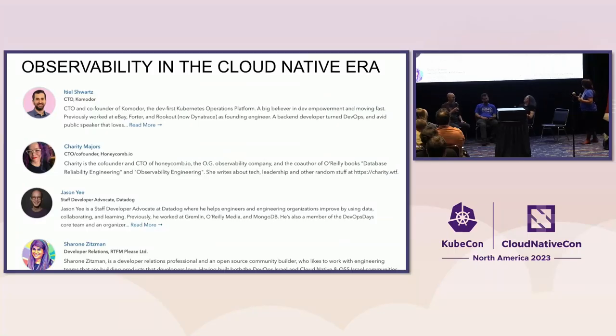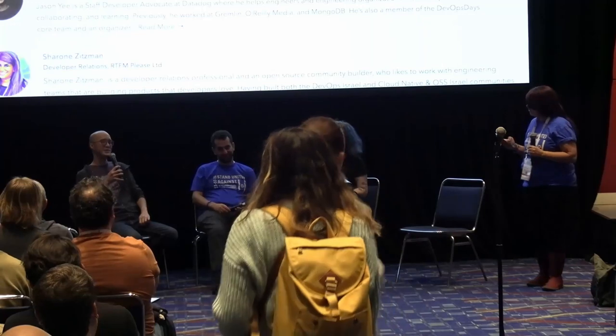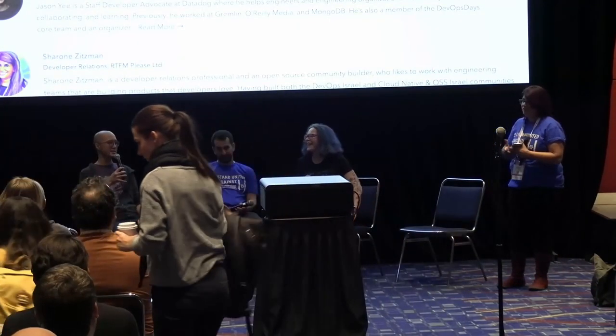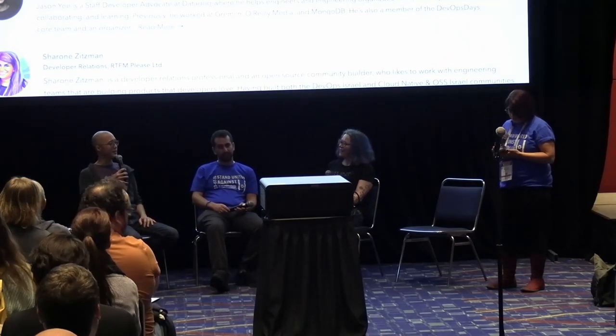I'm Jason, a staff developer advocate at Datadog. I've worked at a number of places — I was at Gremlin doing chaos engineering, because it turns out that breaking things is a good way to test your observability and see what happens. Before that I was a software engineer at MongoDB and other places. Fun fact: I used to be a chef. I would work four 10-hour days Monday through Thursday, then Friday, Saturday, Sunday I worked in a restaurant.